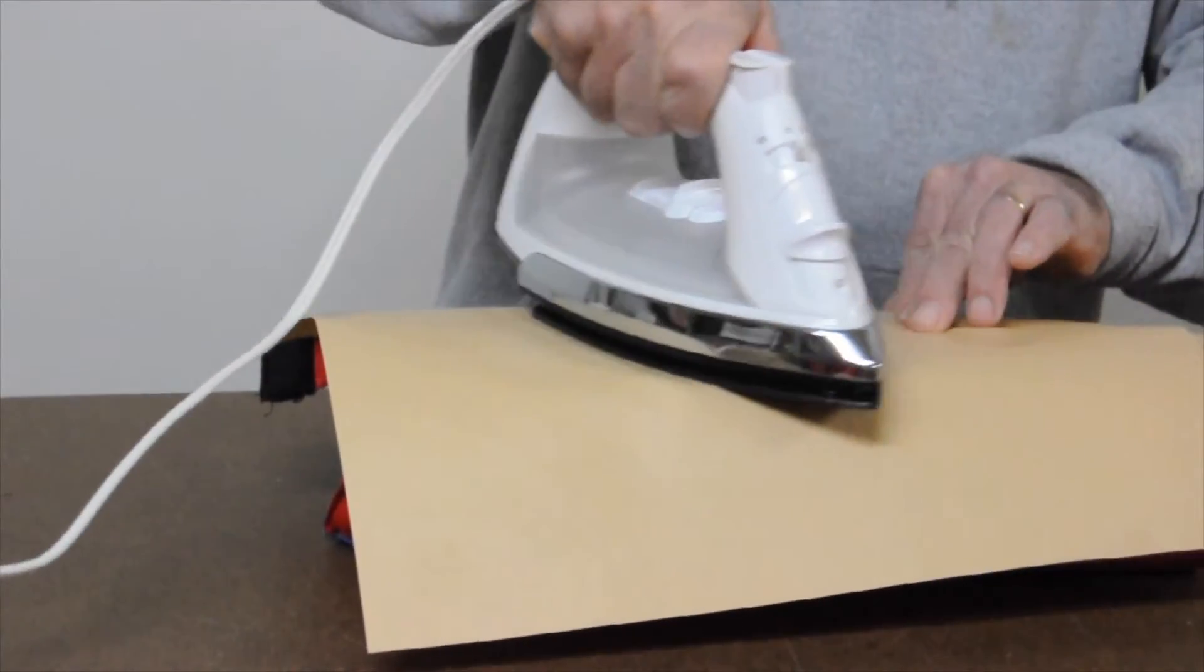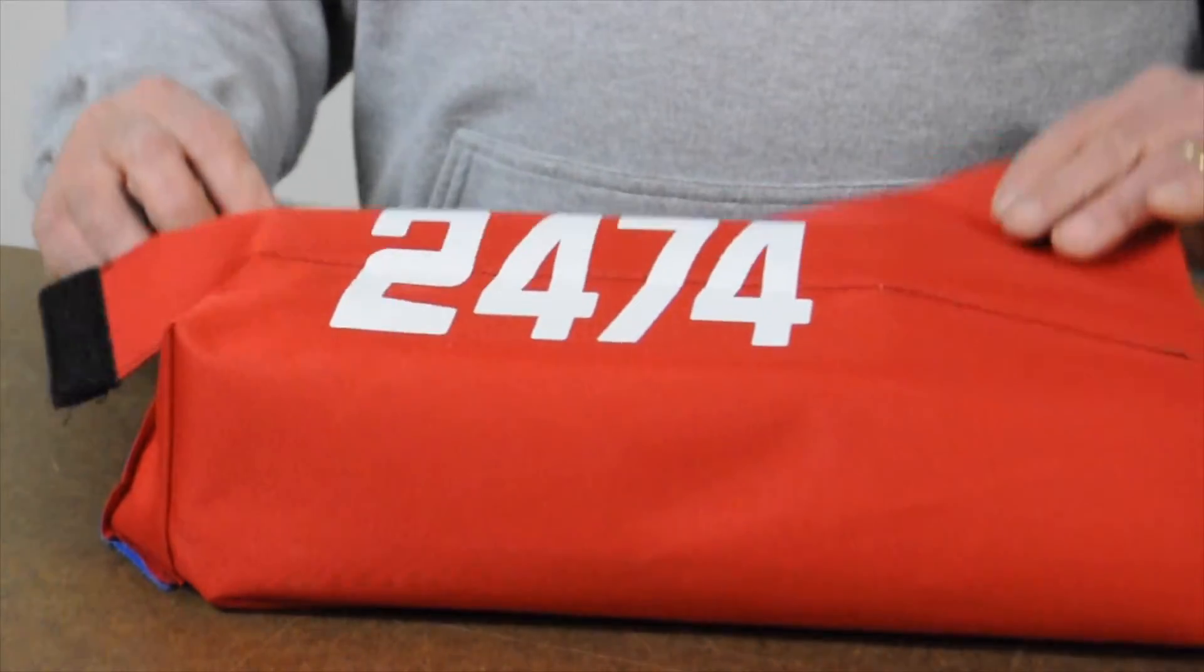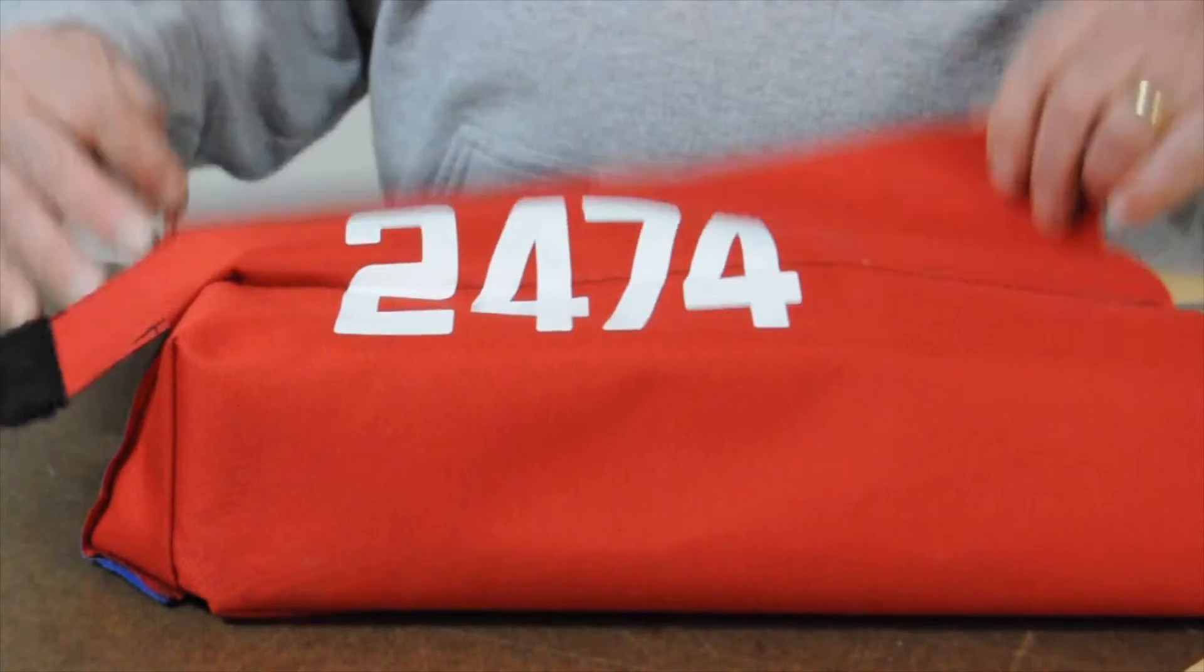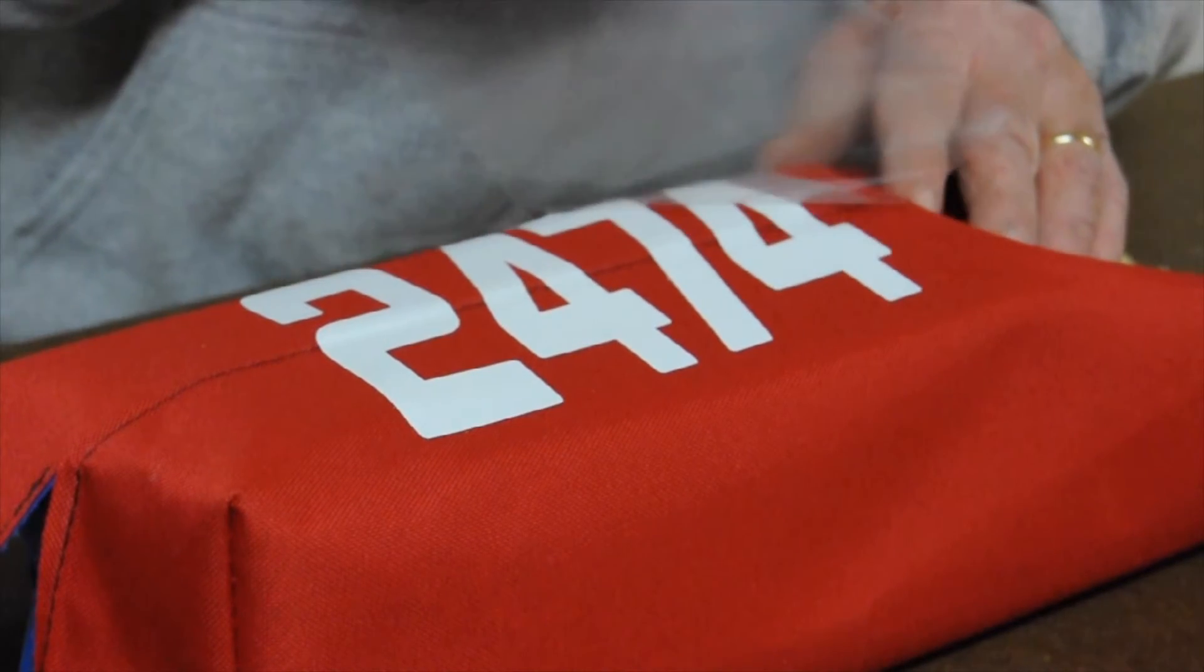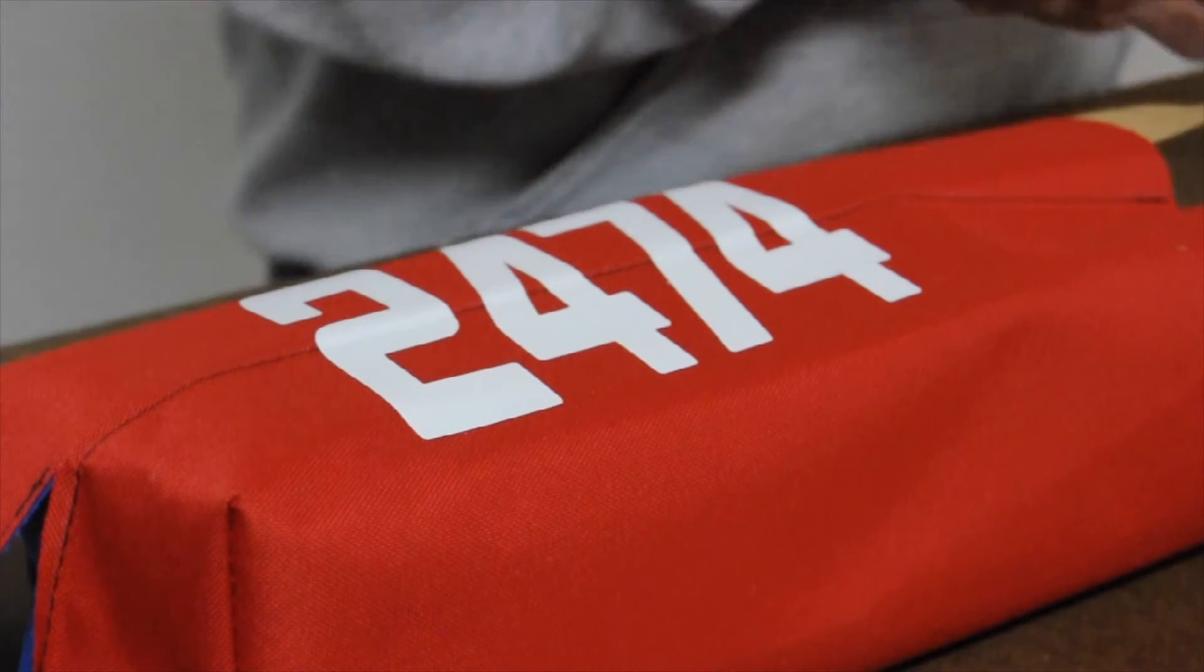Do this by centering the numbers over the middle sewn seam and align the Velcro so that it is on the top on the red side and on the bottom on the blue side. After removing the cover from the numbers, reapply heat to ensure that all the edges are firmly attached.